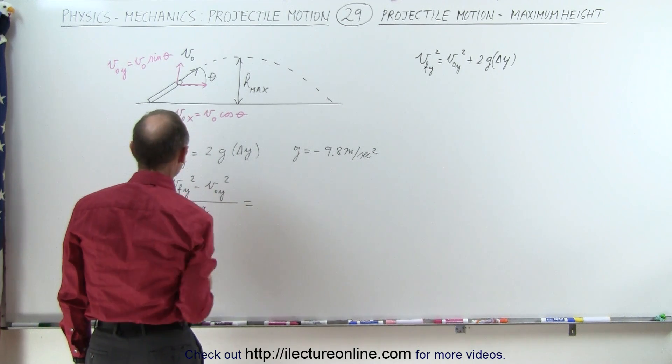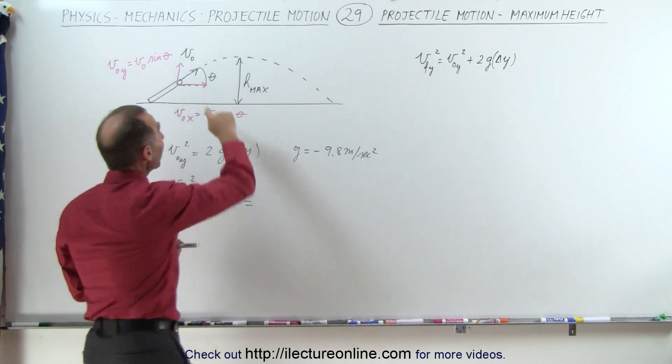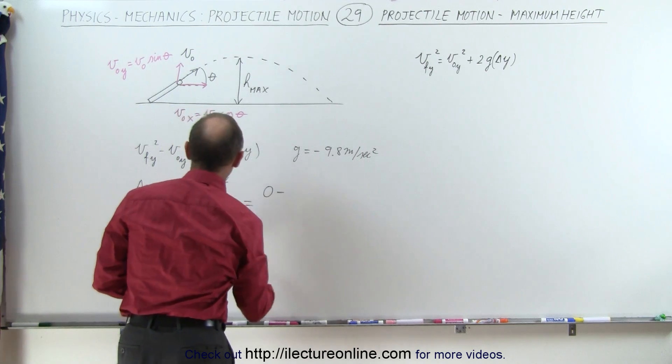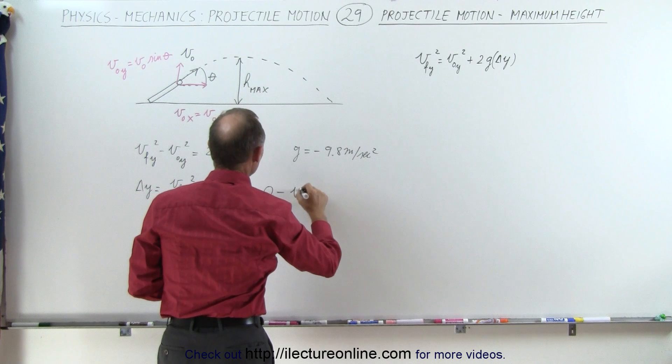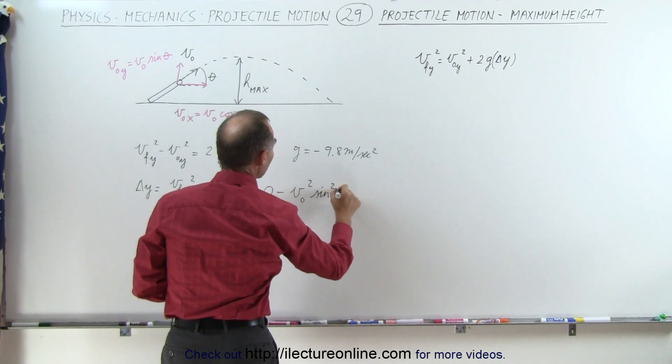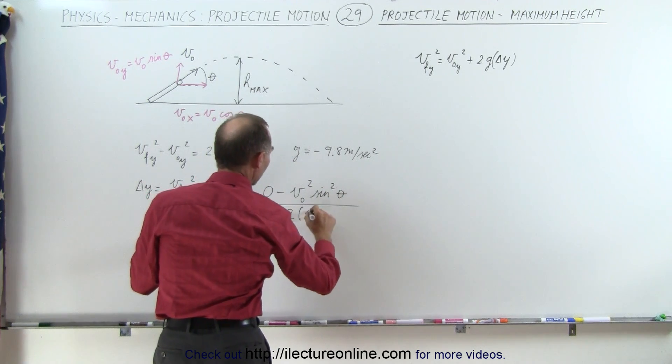When we plug in some numbers, we get the following. The final velocity in the y-direction, when it reaches maximum height, that will be equal to 0, minus the initial velocity in the y-direction is given by this equation right here, so it's going to be v initial squared times the sine squared of theta, and we divide that by 2 times g.